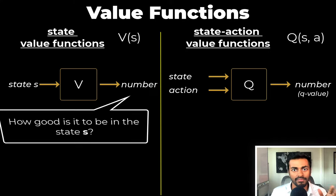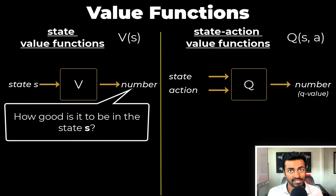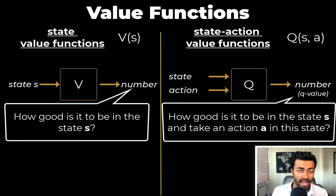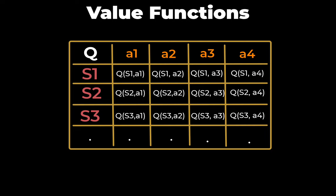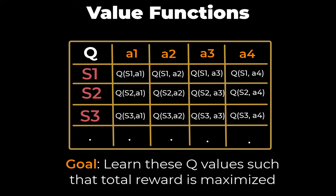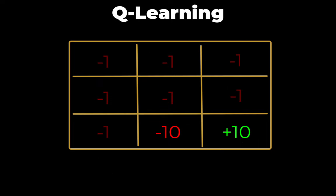Now, the state value that is V(S) will quantify how good is it to be in a given state S. Whereas the state action value or Q value will quantify how good is it to be in a state S and then take an action A in this state. For Q learning, we are interested in learning the state action value function. Because it's a function, you can think of it more easily as a table of rows being states and columns being possible actions. And each cell value will actually be the Q value for that given state and action. And the goal of Q learning is to effectively learn these Q values such that the total reward is maximized.